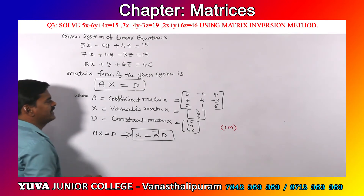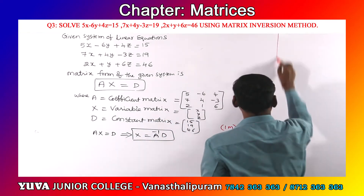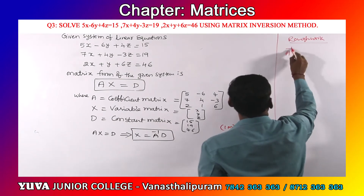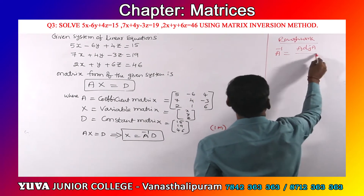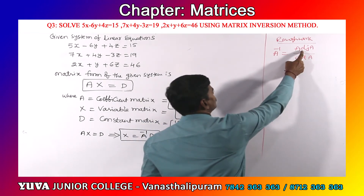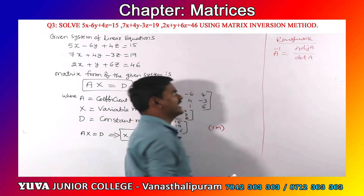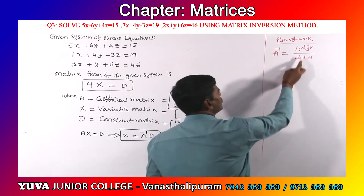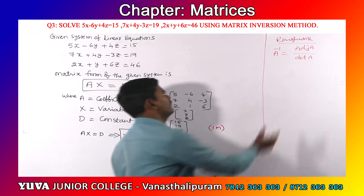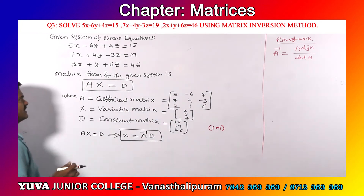The formula for A inverse is adjoint of A divided by det(A). To find A inverse we need two things: adjoint of A and det(A). It is better to find det(A) first, because if det(A) equals zero, the system cannot be solved by the matrix inversion method.